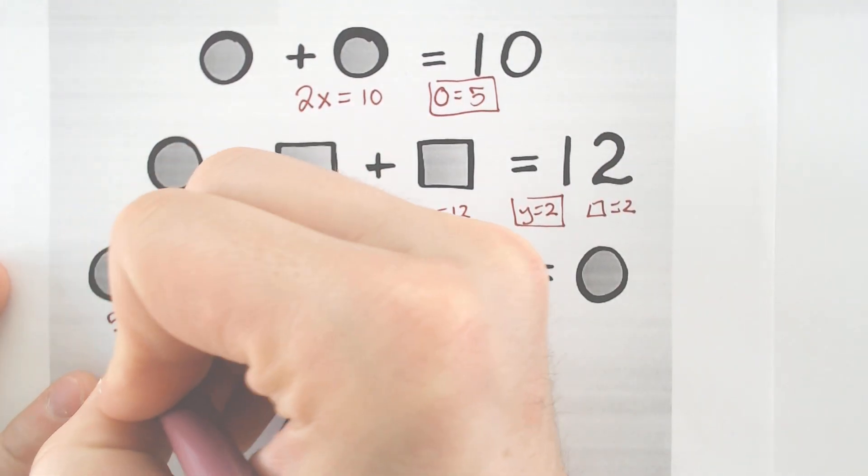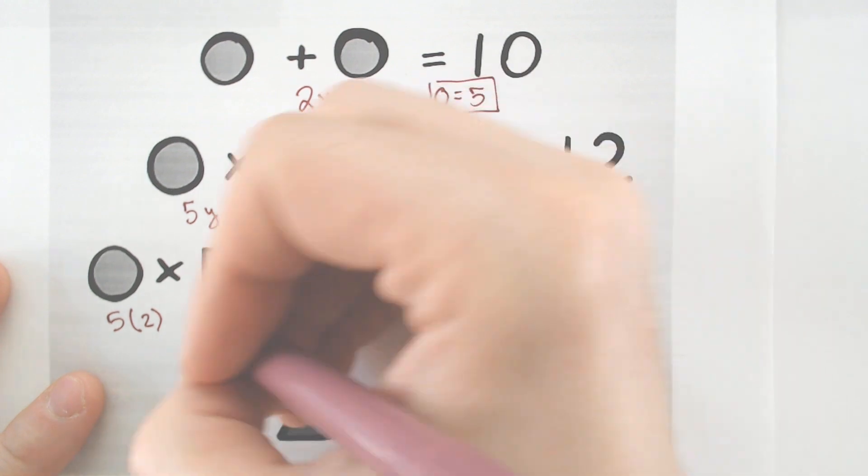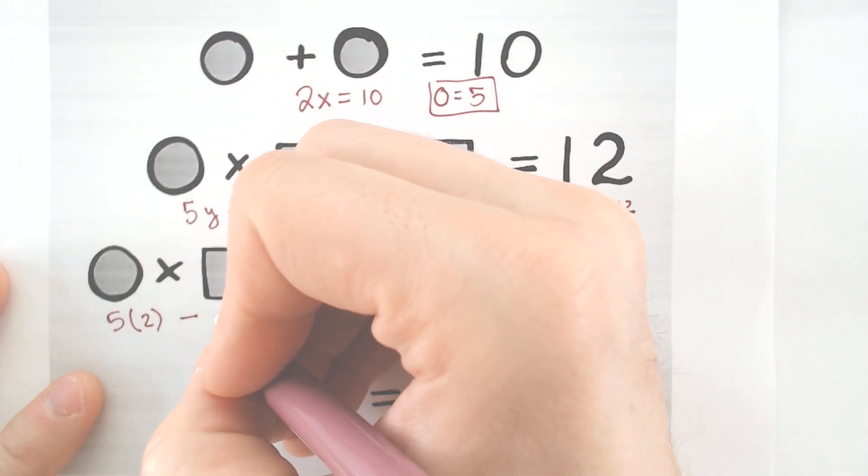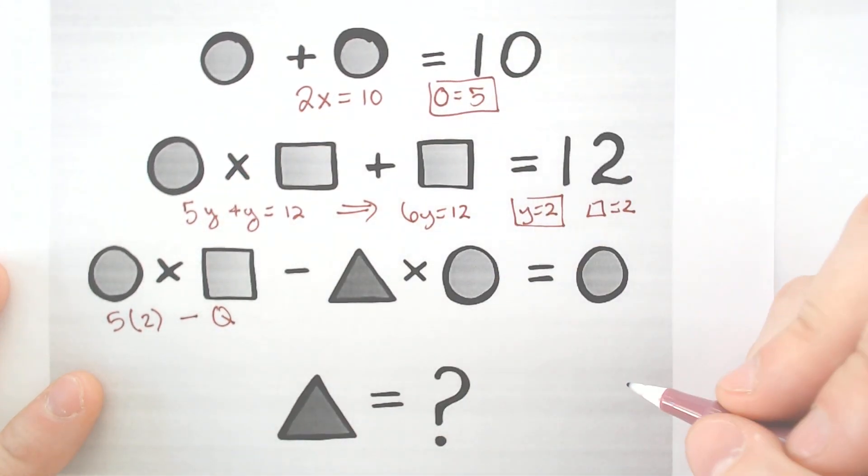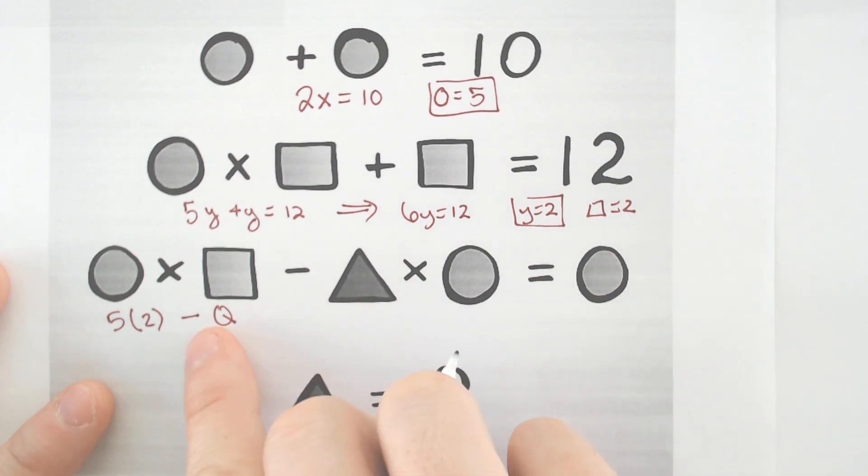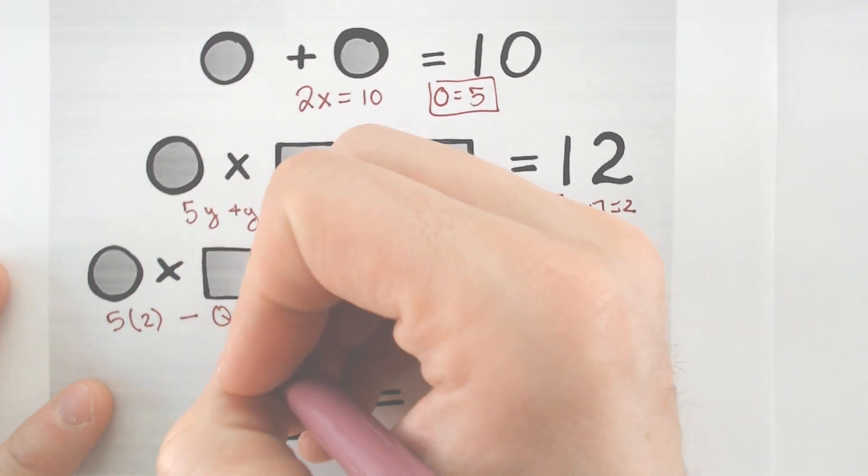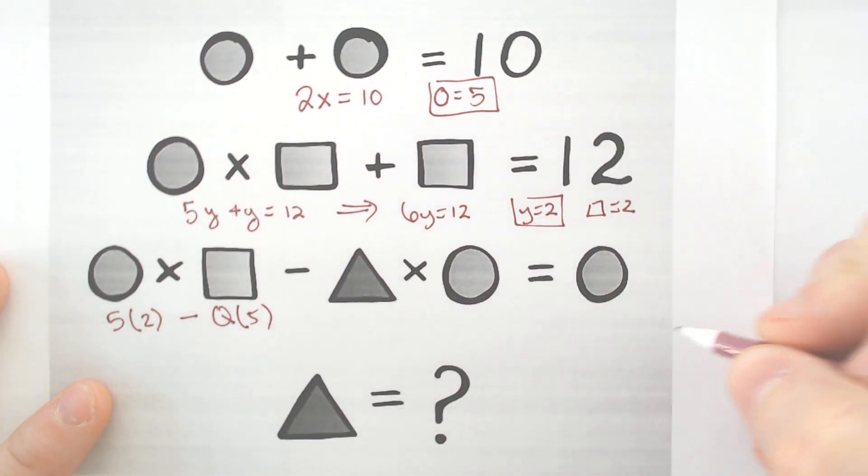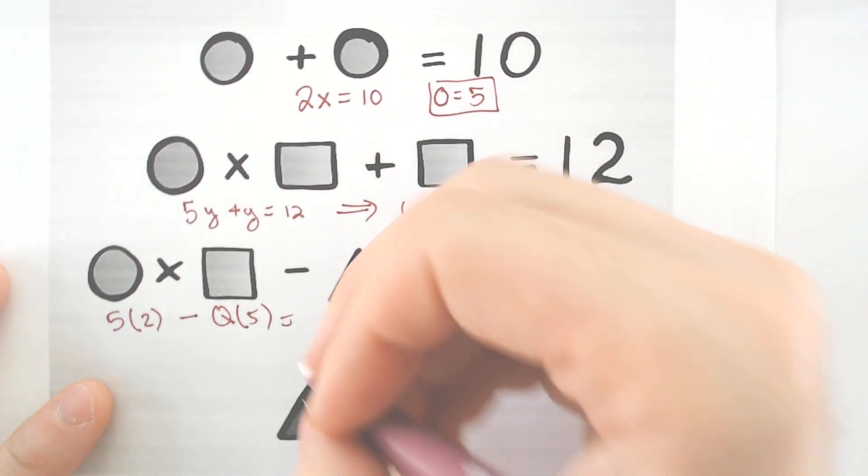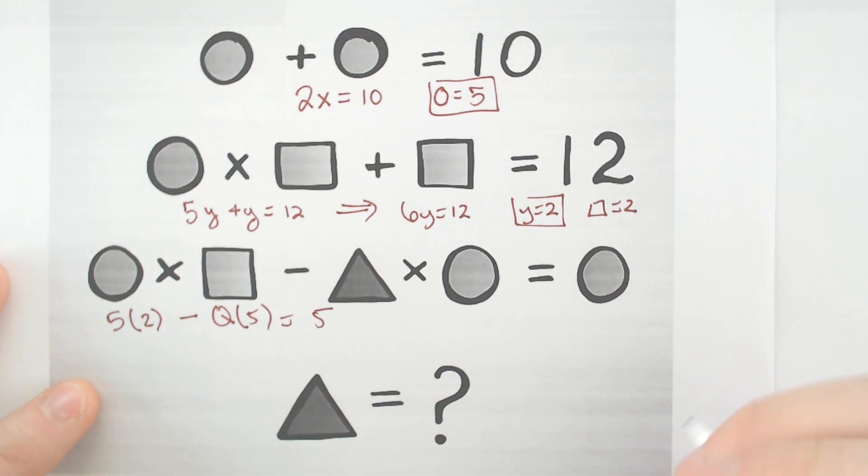Minus a triangle. So I'm going to call that minus Q for triangle, because why not call triangle Q? Times another circle. Well, circle is 5, so times 5 will equal another circle, so we'll equal 5.